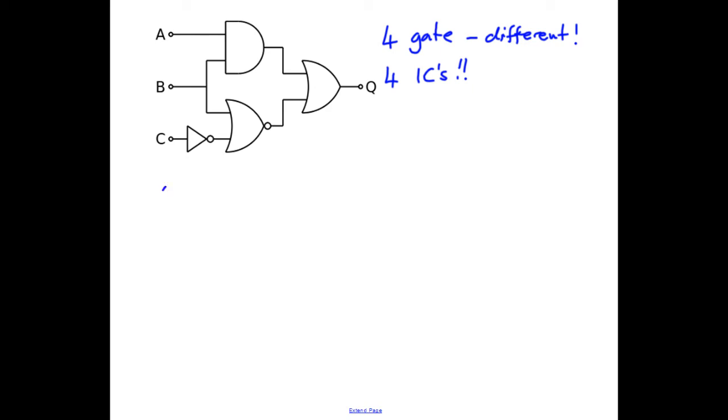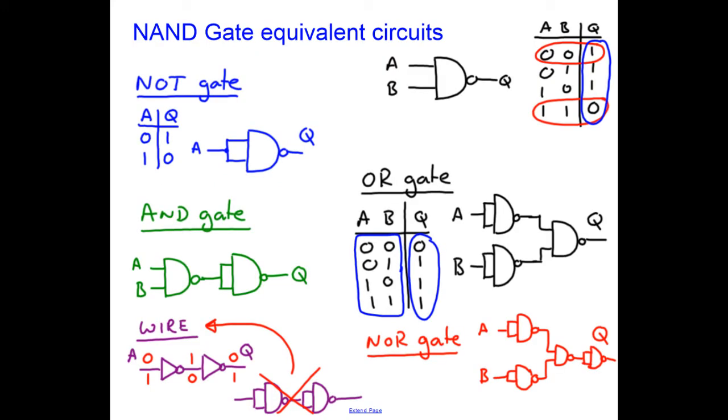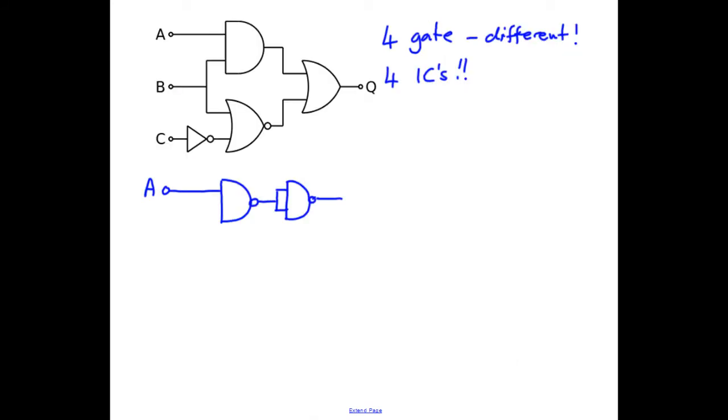So I'm going to redraw the circuit using my NAND gate equivalent circuits. First of all I want an AND gate, which is a NAND followed by a NOT. So that's the AND gate. Unfortunately I've used the wrong colours, that was silly. So this is my AND gate, shown in this part of the diagram in blue. And now further down I have a NOT gate. So let's draw my NOT gate as a NAND gate, like that. So this is my NOT gate, drawn in red, connected to input C.